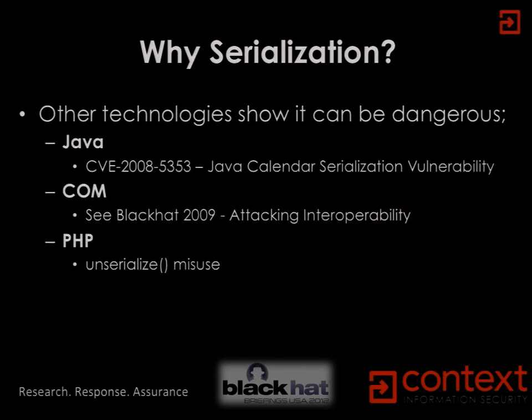So why would we care? What is it about serialization which might be a bad thing security-wise? We only have to look at other technologies to demonstrate the potential risks. There's almost the canonical example of serialization vulnerabilities in Java. If you were here in 2009, you may have seen the presentation on attacking interoperability by the IBM X-Force team about COM serialization issues. PHP is another example — there's an unserialize method, and if untrusted data gets sent to that method, potentially bad things can happen.